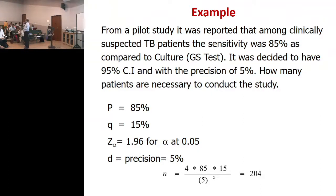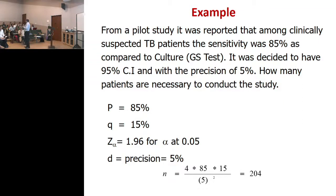So the sample size jumps significantly. You may not be able to study 256 subjects. So if I put 5% precision, it gives 256; if I put 10%, it gives 64. Can you study 100 subjects? Yes, you can. Then you would say: if I study 100 subjects, that will give me a sensitivity of about 80% with a precision of somewhere between 5 to 10%.